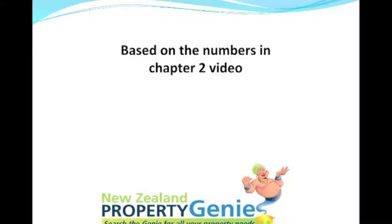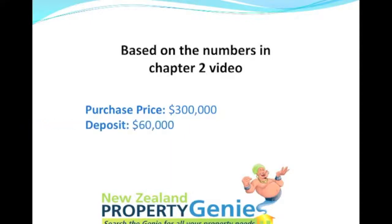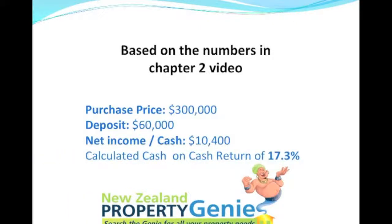Based on the numbers in chapter two, we have a purchase price of $300,000, a cash deposit of $60,000 used in the deal, and a net cash income of $10,400. The calculated cash-on-cash return is 17.3%. So if you put a deposit of $60,000 cash and receive $10,400 return on that investment, the return is 17.3%.